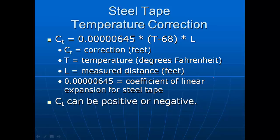Steel tapes change length with temperature, so we correct our readings using this formula: C_t equals the coefficient of linear expansion for steel times (T minus 68) times L. Here C_t is the correction to apply to our distance; the coefficient is what we call the coefficient of linear expansion for our steel tape; the temperature difference is between the temperature at the time of measurement and 68 degrees — the standard calibration temperature; and L is the measured length, which could be less than or many multiples of one hundred feet.